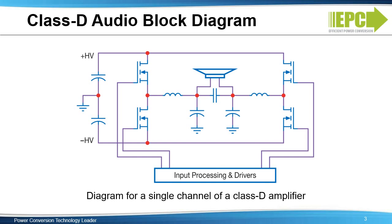GAN-based Class D amplifiers, such as the one shown here, can achieve efficiencies of 90% to 95% while providing high quality in less space and at a lower cost. In Class D systems, pulse-width modulators synthesize the analog waveform into a digital format. A higher pulse-width modulation frequency will generate a higher quality digital representation of the analog signal.